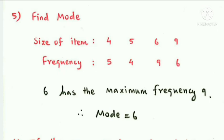Next question: Find the mode. Size of the item (x): 4, 5, 6, 9 with corresponding frequencies: 5, 4, 9, 6. The highest frequency is 9, corresponding to x = 6. Therefore, 6 has the maximum frequency, so the mode answer is 6.